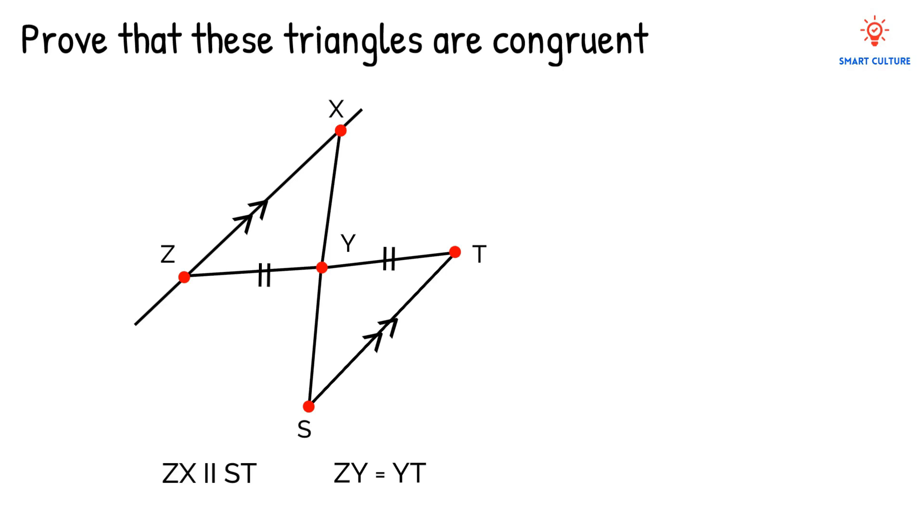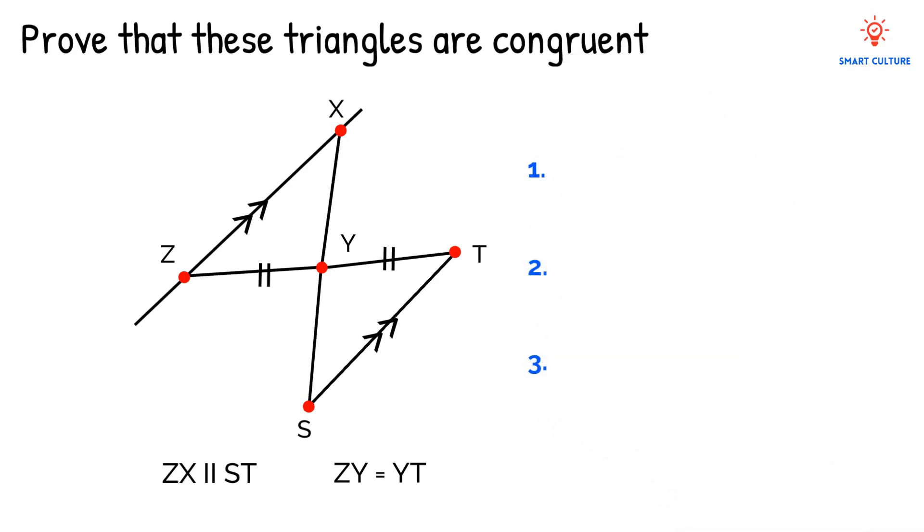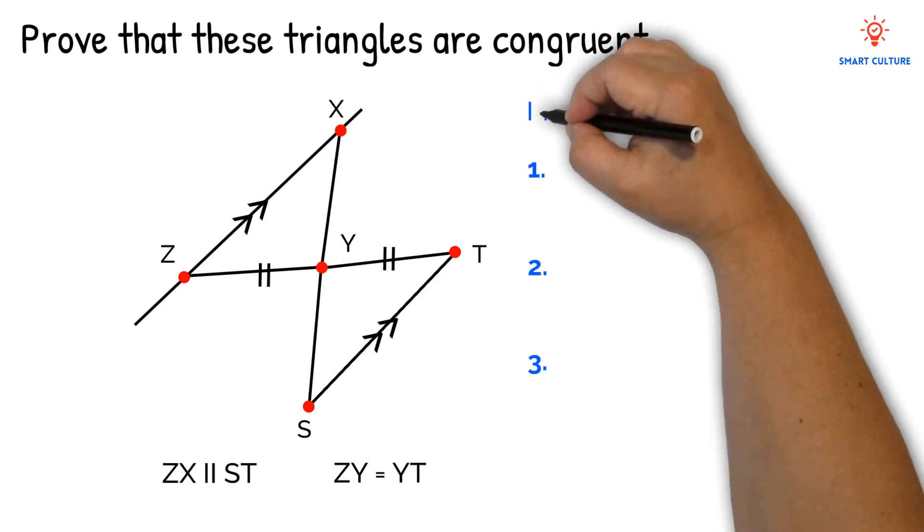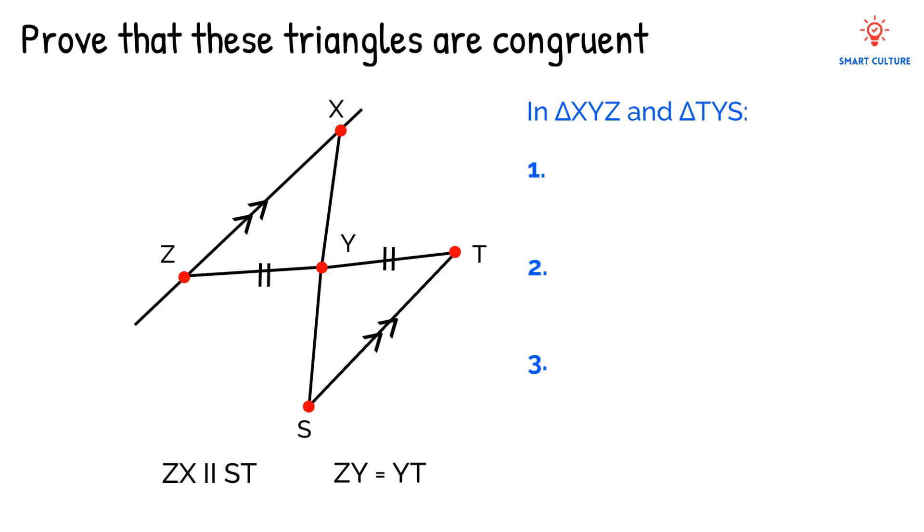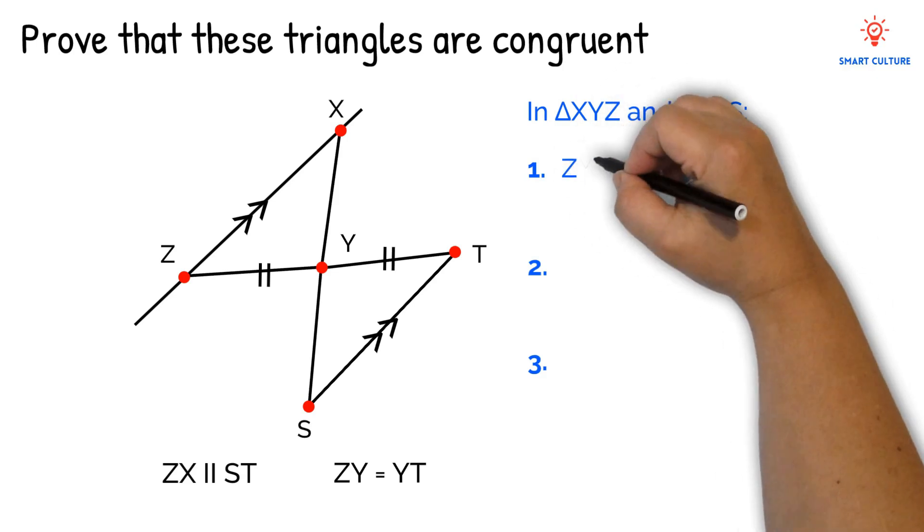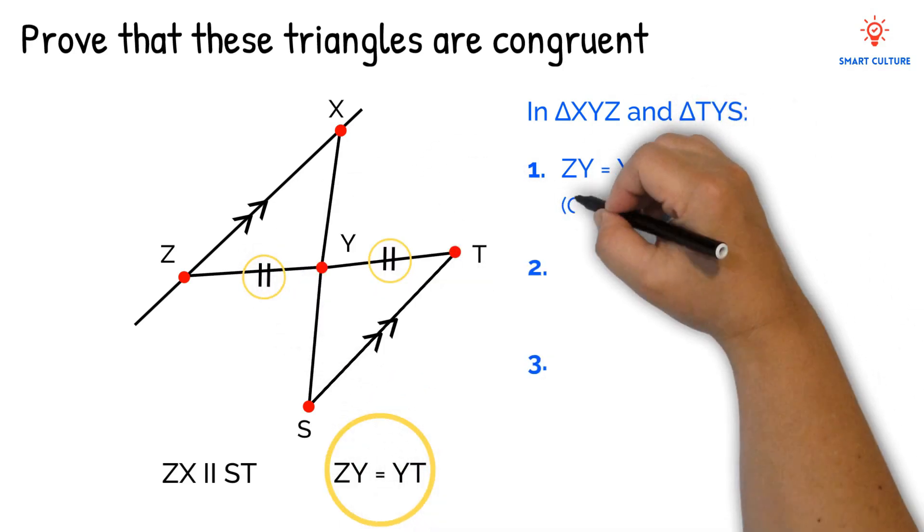Remember, in order to prove congruency, we need to give three statements to prove that the triangles are congruent and give reasons for each statement. We also need to give a reason for congruency. When you look at these triangles, what do you notice? In triangle XYZ and triangle TYS, our first statement would be that ZY equals YT. And the reason is this information is given.